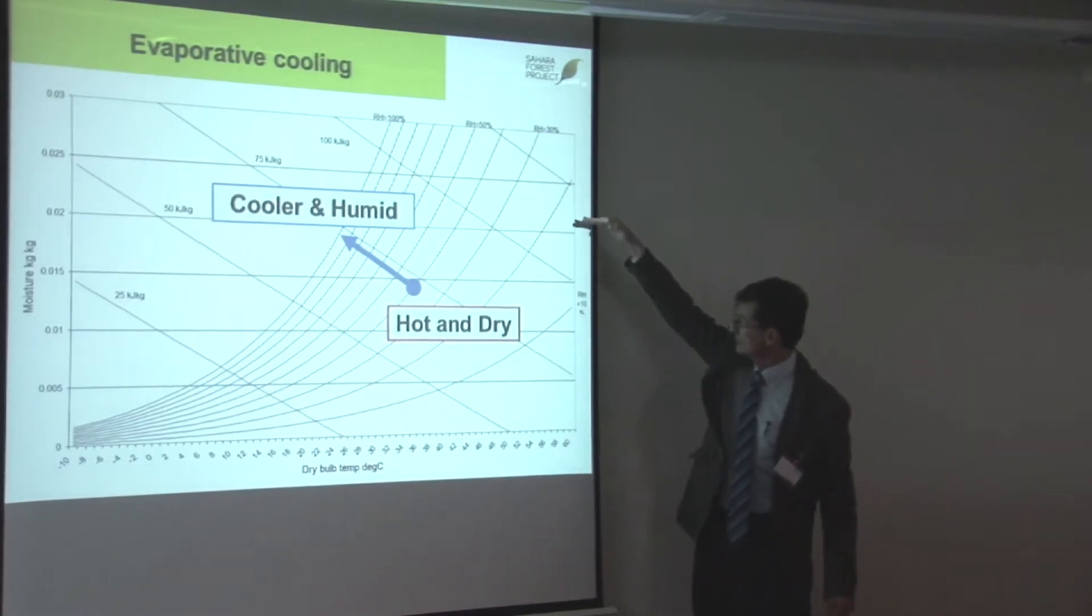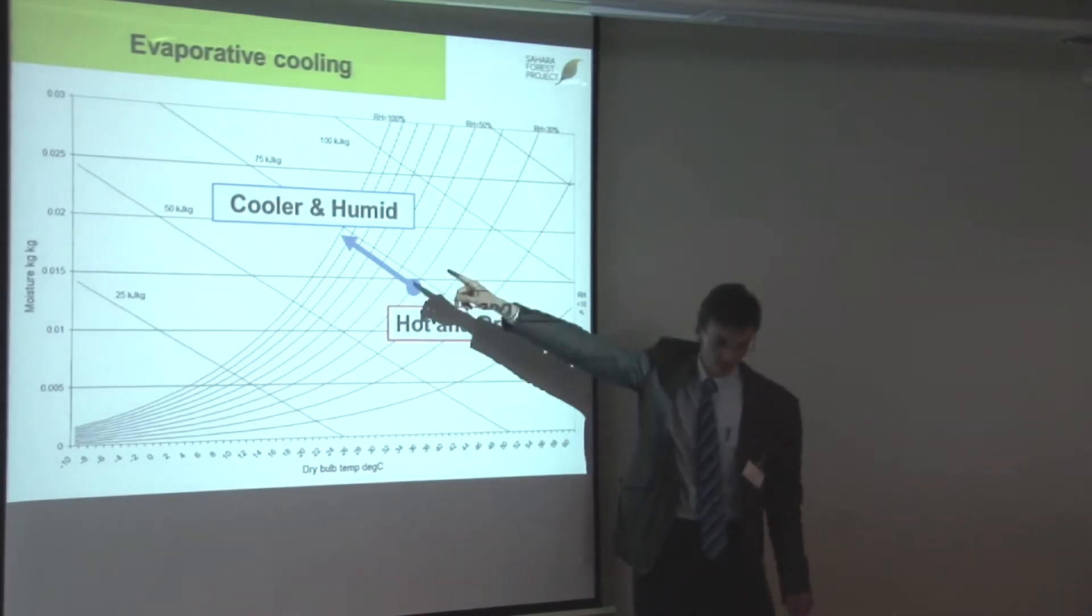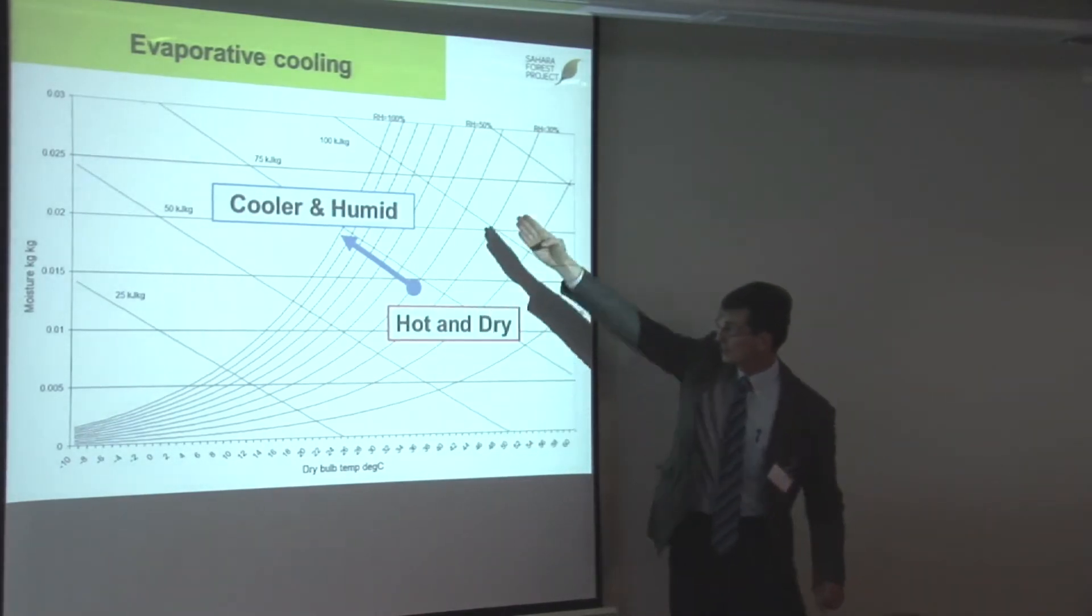This is the moisture content of the air. As the air gets hotter, it can accommodate more moisture in it. So that's why these curves go up like that.